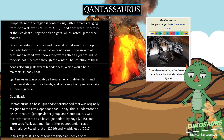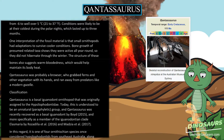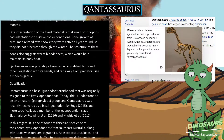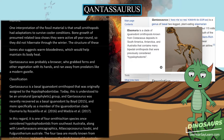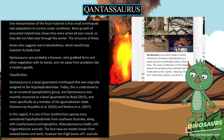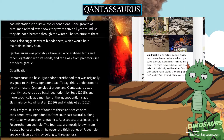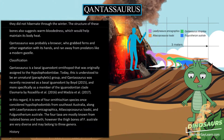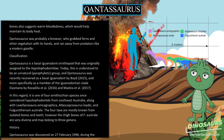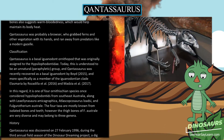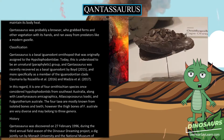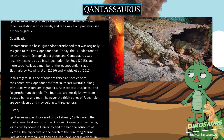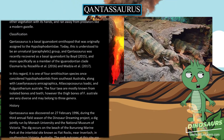Qantasaurus is a basal iguanodont ornithopod that was originally assigned to the Hypsilophodontidae. Today, this is understood to be an unnatural, paraphyletic group, and Qantasaurus was recently recovered as a basal iguanodont by Boyd (2015), and more specifically as a member of the iguanodontian clade Rhabdodontomorpha by Rozadilla et al. (2016) and Madzia et al. (2017). In this regard, it is one of four ornithischian species once considered hypsilophodontids from southeastern Australia, along with Leaellynasaura amicagraphica, Atlascopcosaurus loadsi, and Fulgurotherium australe. The four taxa are mostly known from isolated bones and teeth; however, the thigh bones of F. australe are very diverse and may belong to three genera.